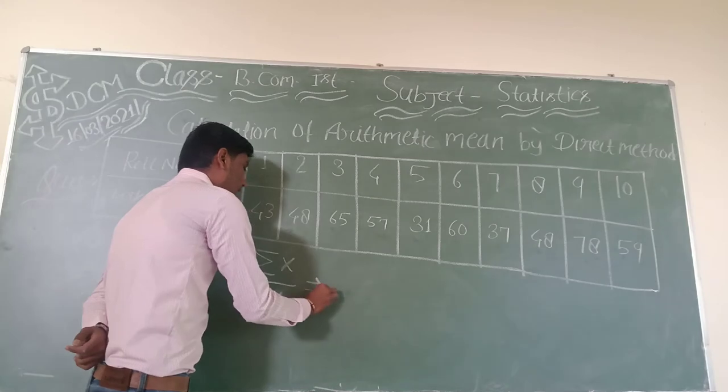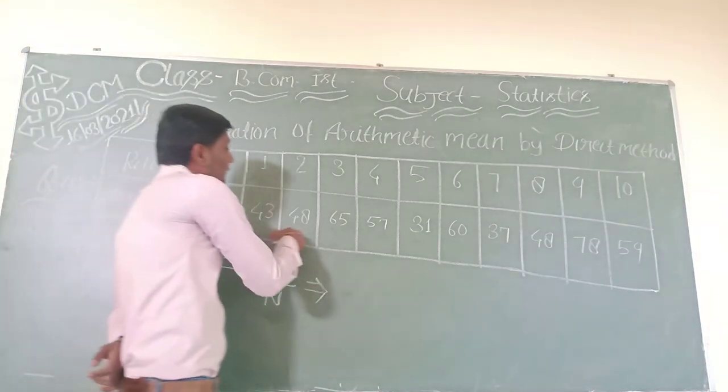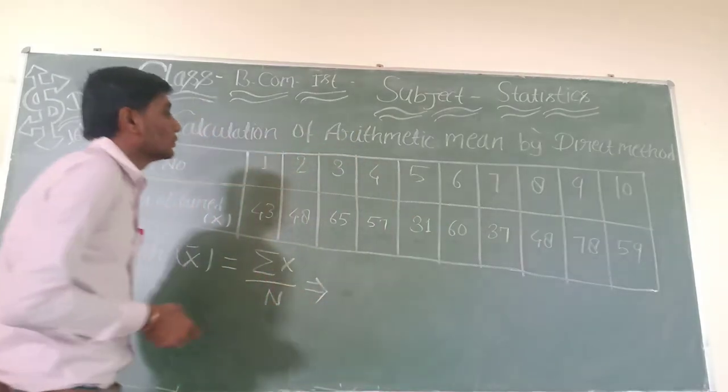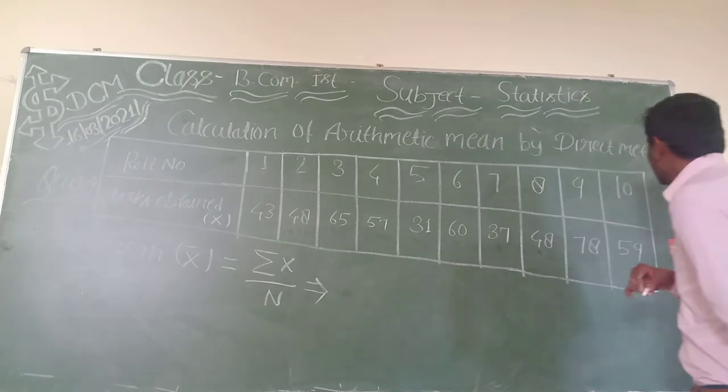So first of all, sigma x represents the sum. Sigma x is equal to the total sum of all the values.